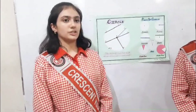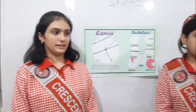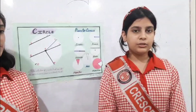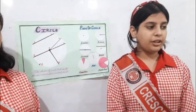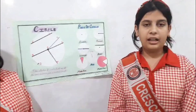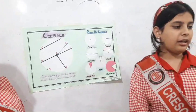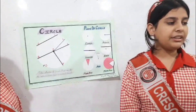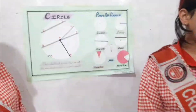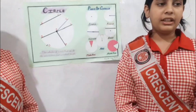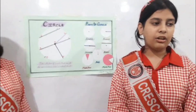The distance between the center and any point on the circle is called radius. A line segment that passes through the center of the circle and touches two points on its edge is called the diameter.